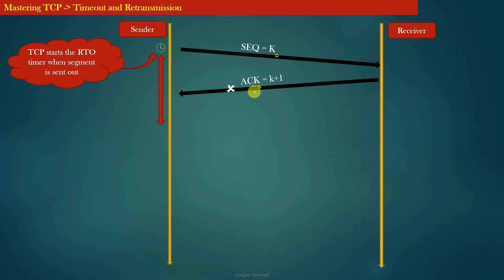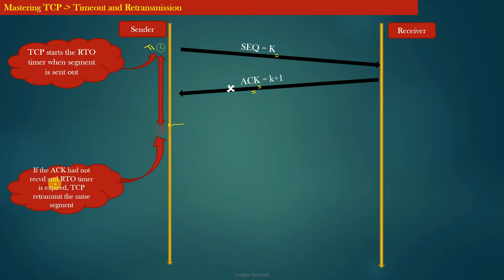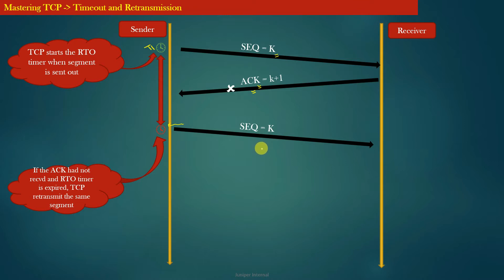You can see in this example that the ACK has been lost in the network. So the TCP sender will continue to wait until the retransmission timer T1, which it set when it sent out the data segment, expires. If the ACK has not been received by the TCP sender and the RTO timer expires, TCP simply retransmits the same segment. This is how TCP retransmits the same segment when the retransmission timer expires and the ACK does not arrive.